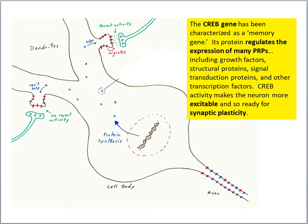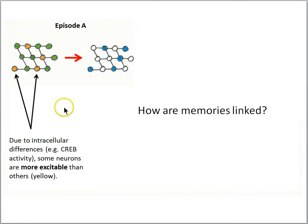With that in mind, here is a hypothesis about how memories might be linked — specifically, temporal linkage of memories. Event A is going to happen, and then event B, and how the populations of cells may be able to link the memories for events A and B, so that the memory of event A can trigger the memory of event B and vice versa. Let's see how CREB activity might give us a mechanism for linking memories.